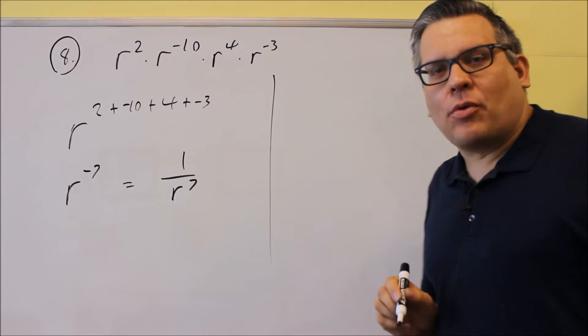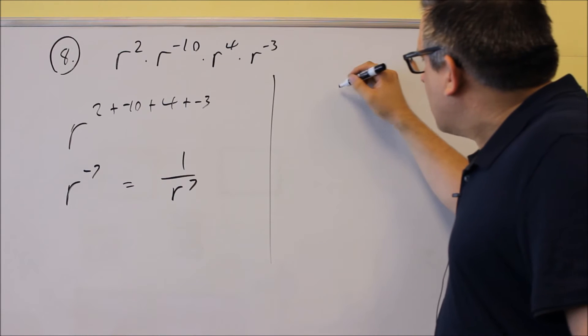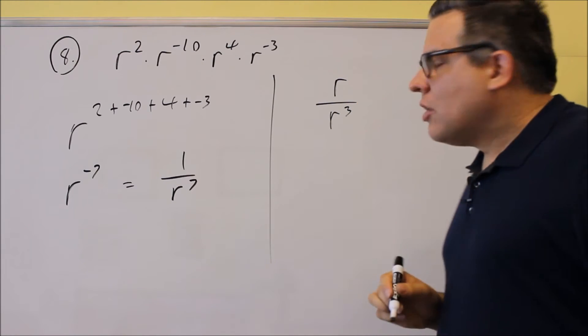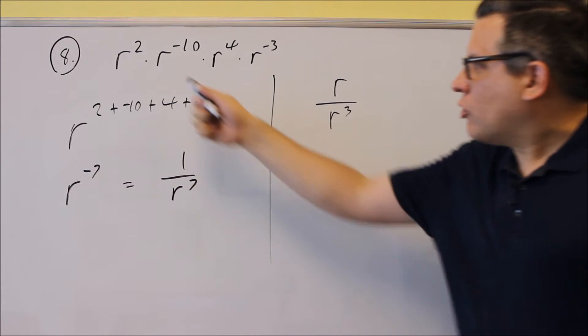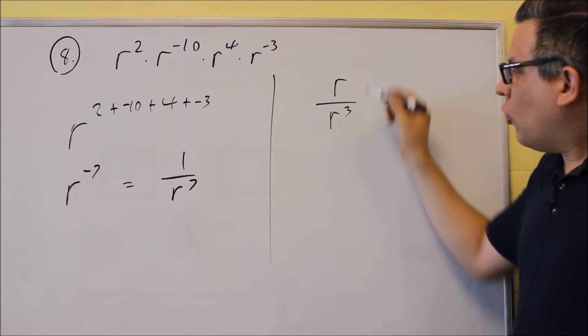Now I want to do another example. Let's do one with some subtraction going on here. So let's say I have r on top and I have r cubed down below. So this is one where we did some multiplication, but you should also know how to do one where you're dividing it.